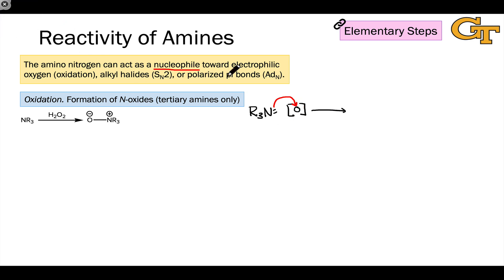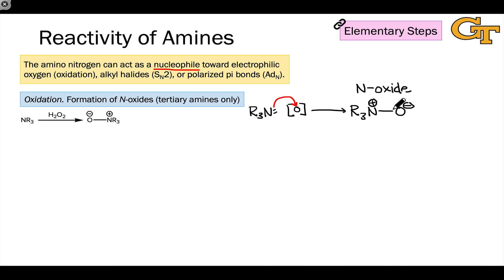The resulting functional group is an N-oxide — a product in which the amino nitrogen is formally positively charged and the oxygen that gained the new bond is formally negative. The chemistry is more complicated when you get away from tertiary amines; unusual functional groups like nitrosos can form. Tertiary amines will stop at the N-oxide, and pyridines will as well.